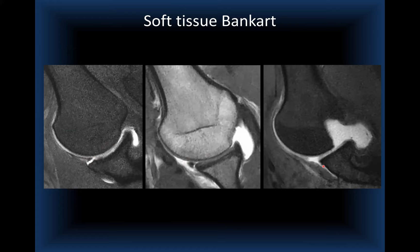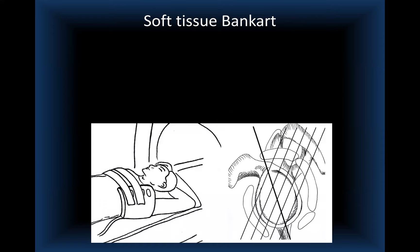A more chronic Bankart case is shown on ABER along with a large Hill-Sachs lesion. The patient is positioned for ABER with the arm in flexion, abduction, and external rotation behind the head. Images are acquired at approximately 45 degrees relative to the long axis of the glenoid. This technique is described in a European Radiology article on the added value of ABER for detection and classification of anteroinferior labral ligamentous injuries.